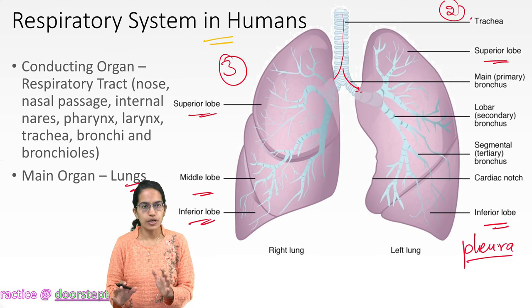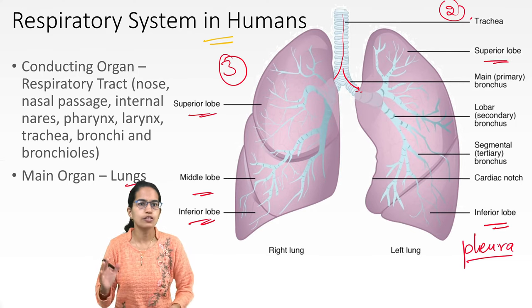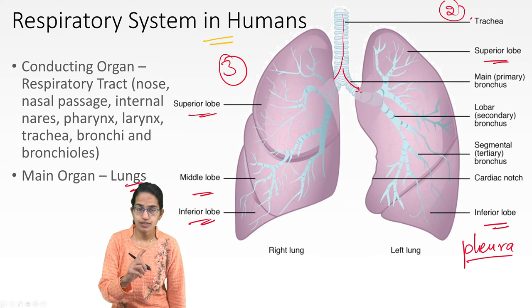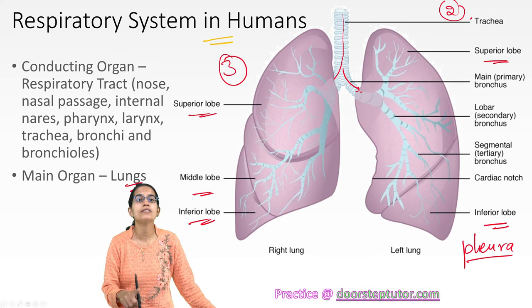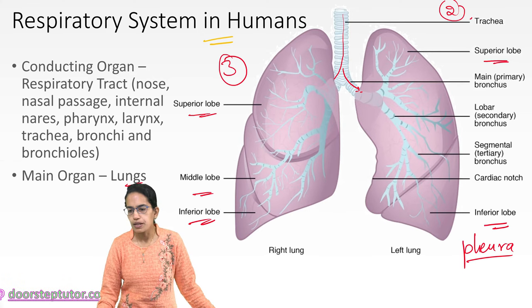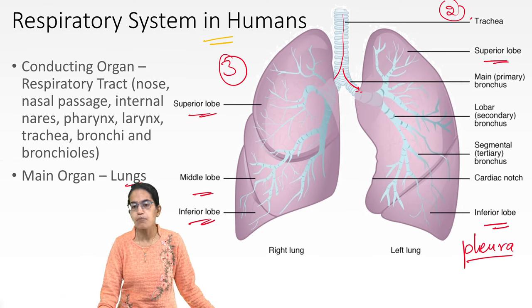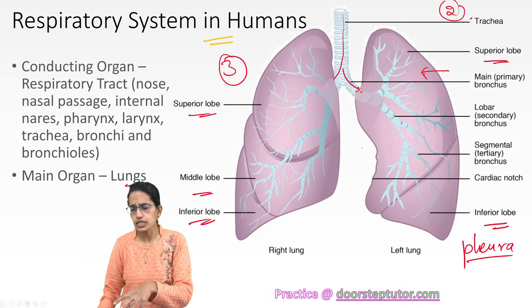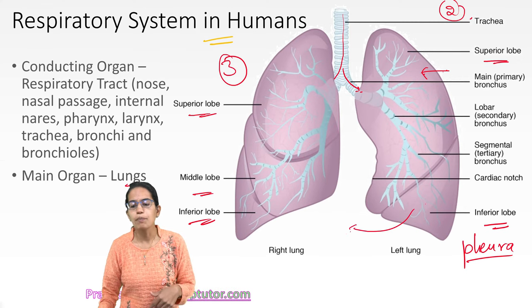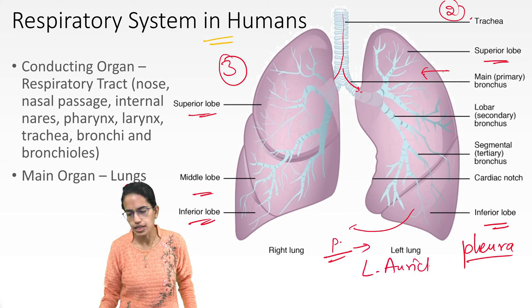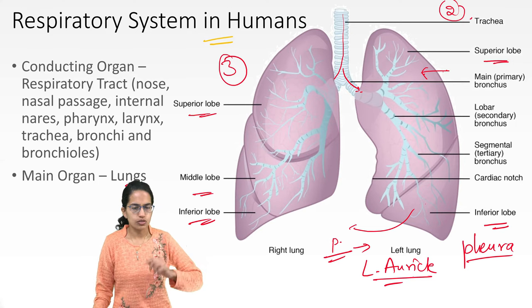The lining of the lung is known as the pleura, filled with pleural fluid, whose main role is lubrication to avoid friction. The pulmonary artery brings deoxygenated blood from the right atricle to the lungs. Within the lungs, it divides and re-divides into a capillary network. Oxygenated blood from the capillaries is supplied to the pulmonary veins, which then empty into the left atricle in the heart.